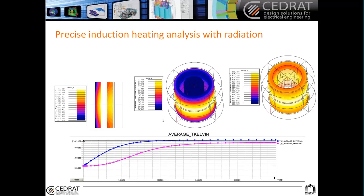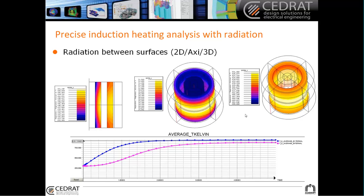Looking at an example here, you have two tubes. The external tube is heated by Joule losses, and then the internal tube is heated only by the radiation of the external tube. Over time, we will heat first the external tube, and then after a delay, we will heat also the internal tube. This helps you go further into induction heating analysis, and it's available in 2D, axisymmetric, and 3D.